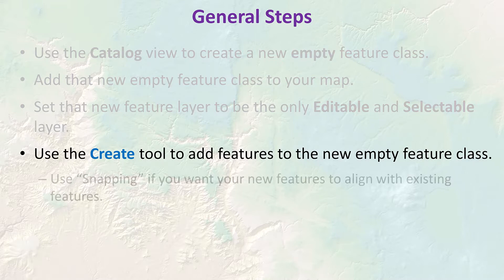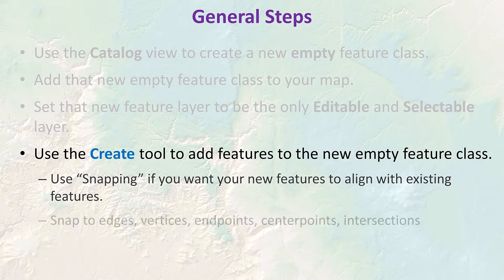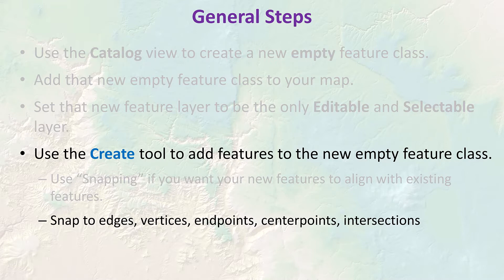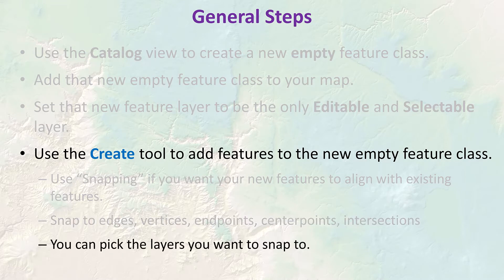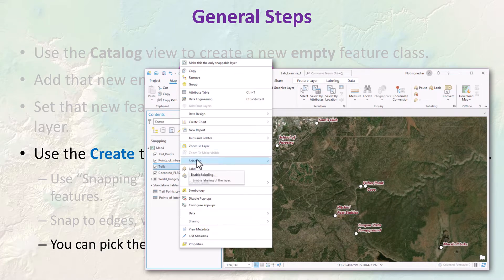When we do this, we'll set snapping parameters if we want our new features to snap right to existing features. The snapping parameter is quite useful — you can snap to vertices, edges, endpoints of polylines and polygons, midpoints, intersection points between two polylines or polygons, and even tangent points on curved lines. You can also pick which layers you want to snap to by setting the snapping option in the contents pane.